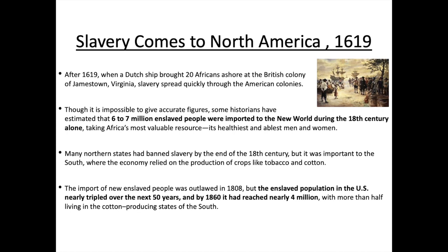Many northern states had banned slavery by the end of the 18th century, but it was important to the south where the economy relied on the production of crops like tobacco and cotton. The southern states are significantly hotter, which means they have the plantations and fields that can grow crops — so it made sense to the southern states to need enslaved people to look after their fields and create produce. The import of newly enslaved people was outlawed in 1808, but the enslaved population in the US nearly tripled over the next 50 years, reaching nearly four million by 1860, with more than half living in the cotton-producing states of the south.